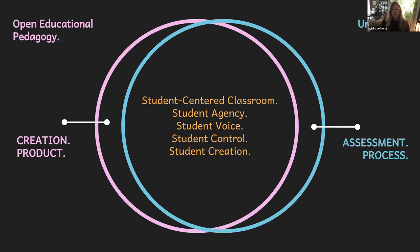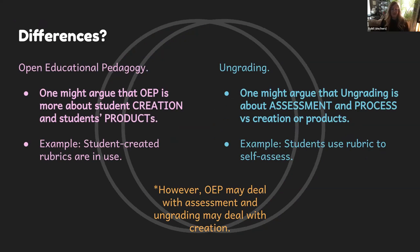Here's our Venn diagram. I left a little crust on the edge of each side because I do think there's a slight difference between the two. Many would argue that OEP has more of a creation/product approach. The orange text in the center shows how it's all student-centered — there's agency involved, the students have voices, control, and they create things. Ungrading has assessment and process on the side, but as we go to the next slide, there's probably even more overlap than there are differences. One might argue OEP is more about creation and products, and ungrading is just about assessment and process.